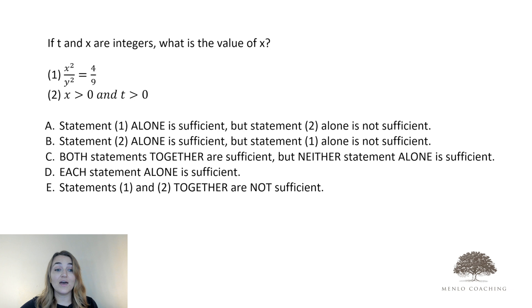we can pretty quickly see that if x squared over y squared is equal to 4 over 9, well then x could be equal to 2 and y could be equal to 3 since 2 squared over 3 squared is 4 over 9.